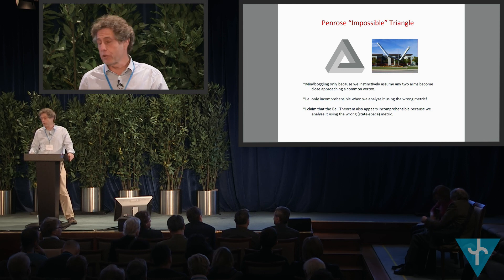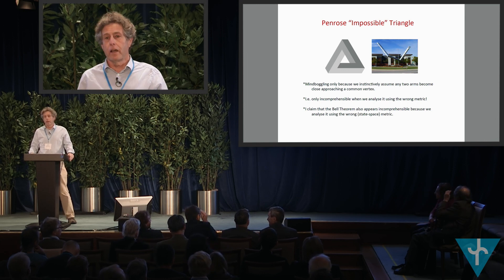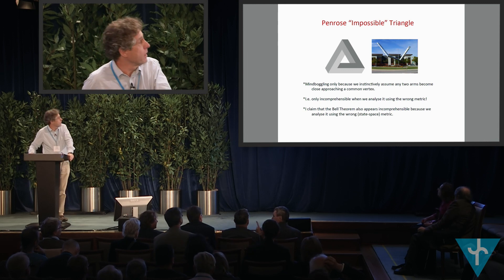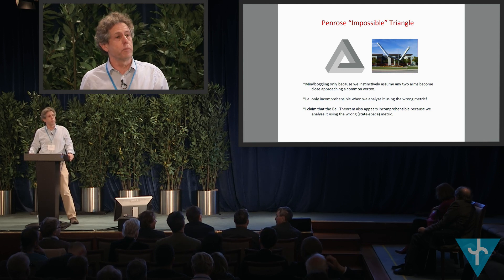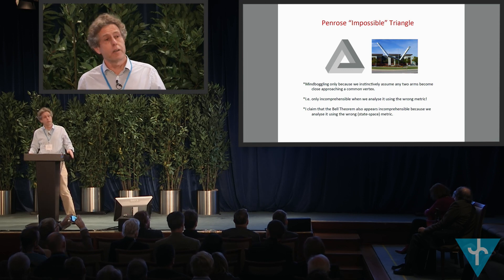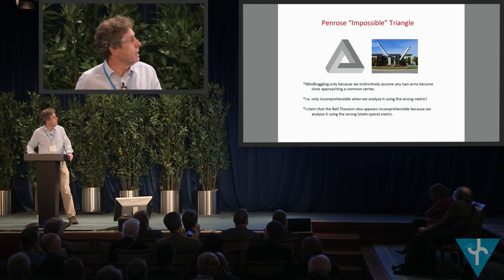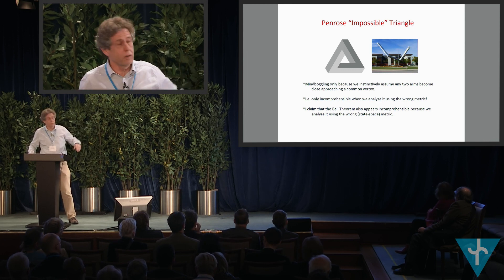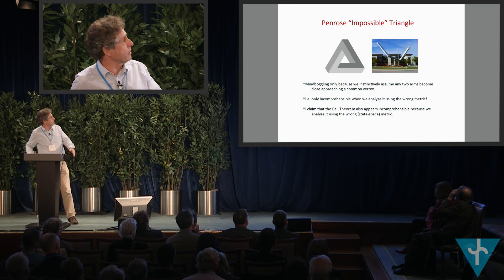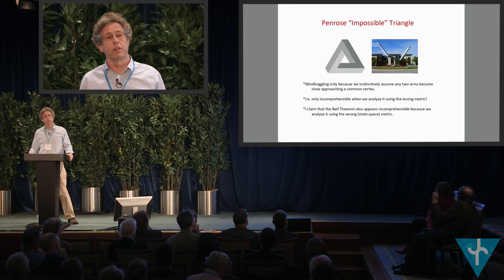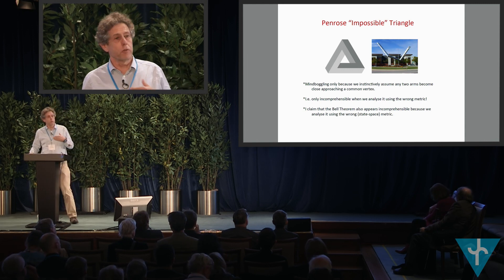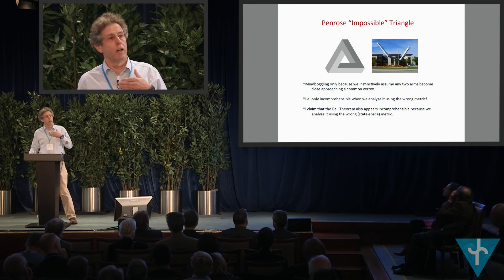As a starter, I want to think about the Penrose impossible triangle shown on the left and ask: why is it so mind-boggling? The answer is that we instinctively assume that any two arms of this triangle are getting arbitrarily close as we approach a vertex. If you relax that assumption — as we can see in the actual physical example on the right — you can construct the triangle. What we're seeing on the left is in some sense a projection of that three-dimensional object.